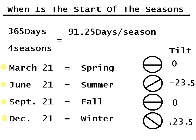March 21st is spring — that tilt is zero degrees. June 21st is summer; we're at maximum tilt at 23.5 degrees. September 21st is back to zero degrees, equivalent to March 21st in spring. And in winter, December 21st, we're tilted back from the solar plane, so that's why it's colder in the northern hemisphere.